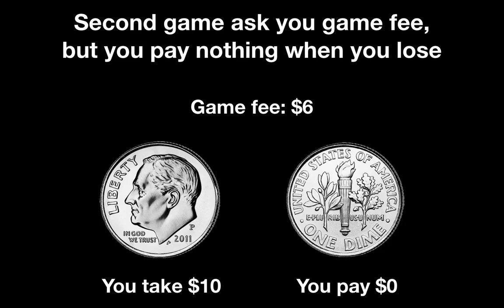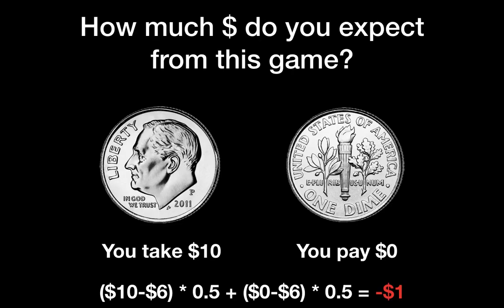Now let's look at the second game. You pay 6 dollars every time you play. You take 10 dollars for the front side, so that's (10 minus 6) times 50%, plus for the back side you have zero dollars but you still paid 6 dollars, so that's (0 minus 6) times 0.5. The result is minus one dollar expected value from the second game.